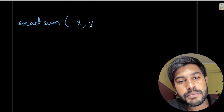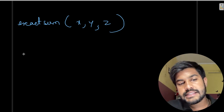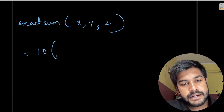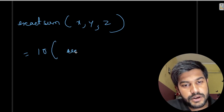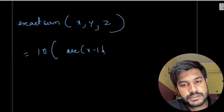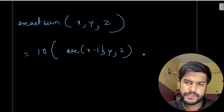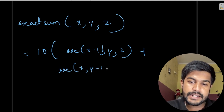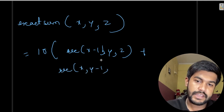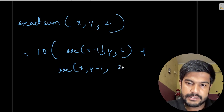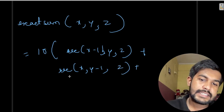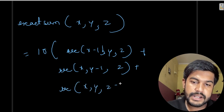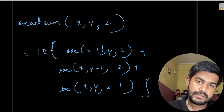The recurrence is: exact sum of (x, y, z) equals 10 multiplied by the recurrence of (x-1, y, z), plus the recurrence of (x, y-1, z) — removing one five — plus the recurrence of (x, y, z-1).